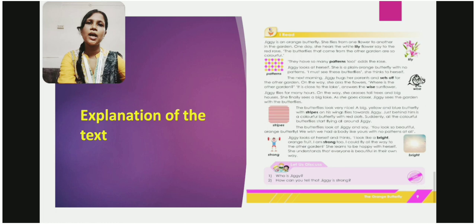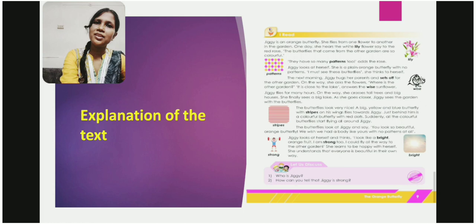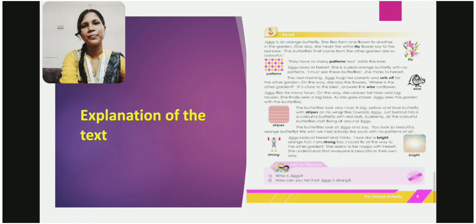I will be explaining the text to you. Dear students, please listen to me carefully and try to understand the text. I hope that you have gone through this chapter twice or thrice at home. From your reading, I think it is clear to you who is the main character of this chapter. Yes, the main character of this chapter is Jiggy. It is an orange colored butterfly.